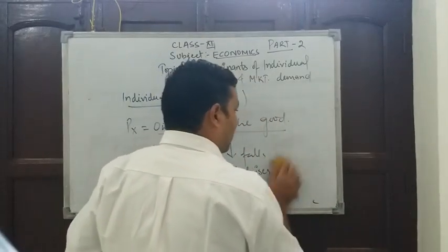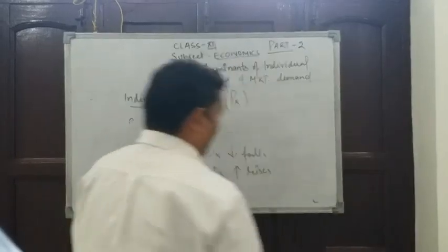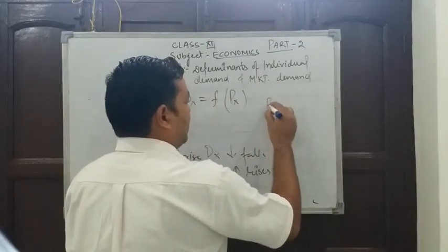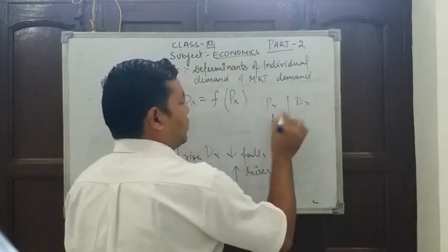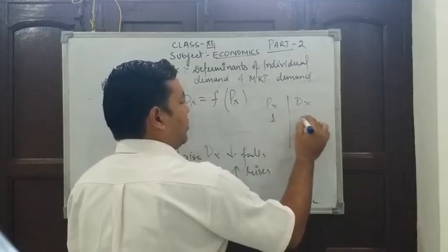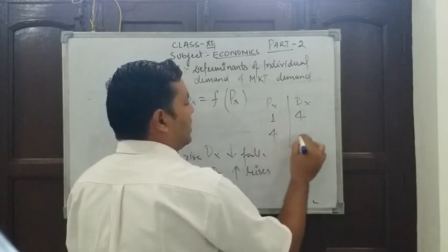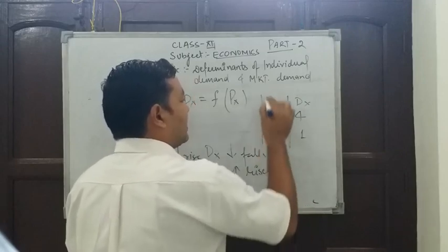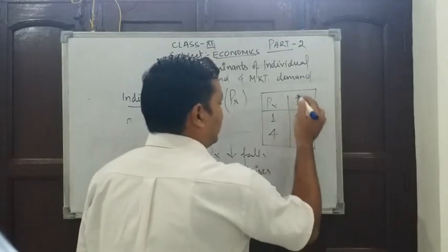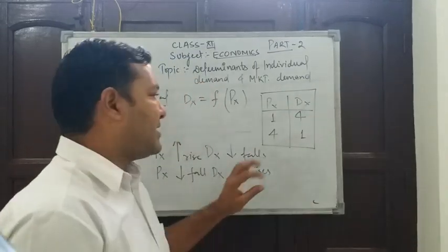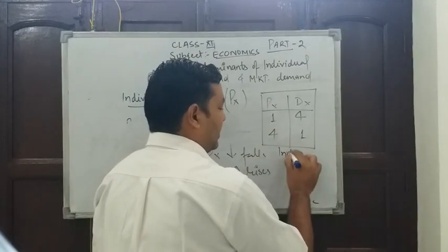If we understand it from a table: suppose price is 1 and we are ready to buy 4 units; if price becomes 4 we will buy less. This is called the individual demand schedule — in economics, every such table is known as a schedule.